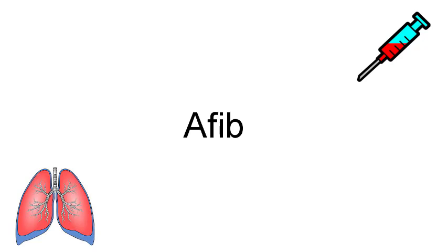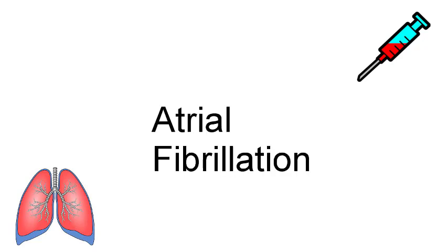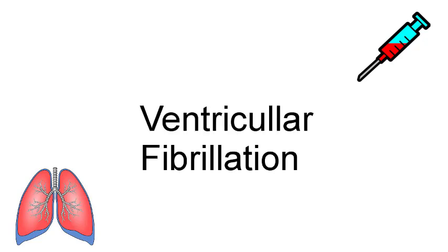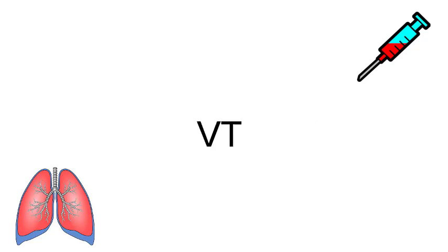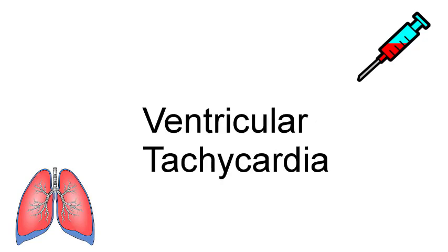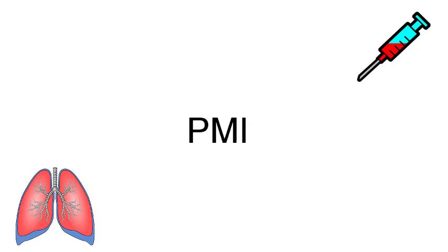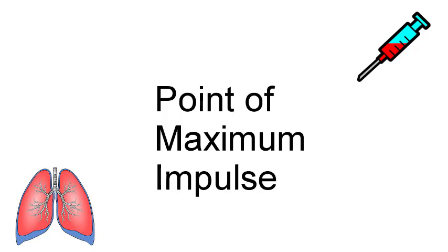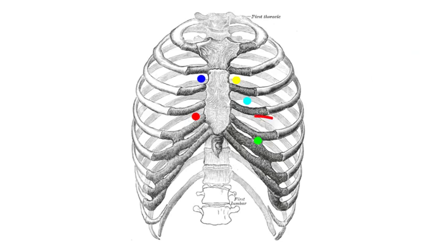AFib, or atrial fibrillation, is a different type of heart rhythm. VFib is ventricular fibrillation — again, a different heart rhythm. VT is ventricular tachycardia. PMI is point of maximum impulse. This also has to do with the heart — specifically when you're listening to the heart, it's the point on the chest where the heart sounds the loudest.